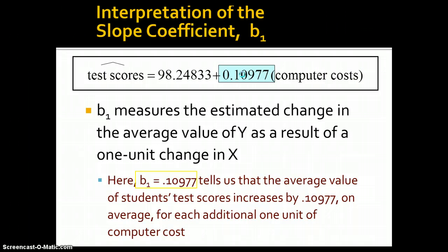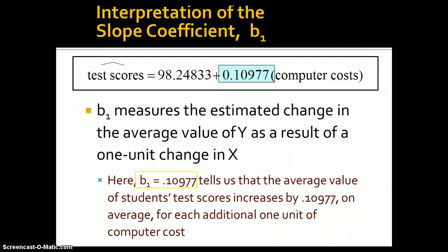If we look at the regression coefficient, b sub 1, that measures the estimated change in the average value of y as a result of a one unit change in x. So here, 0.10977 tells us that the average value of students' test scores increases by 0.10977 on average for each additional one unit of computer cost.